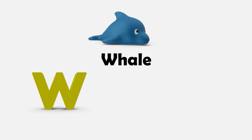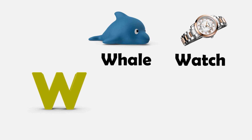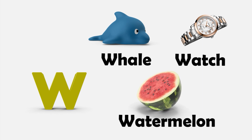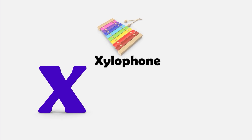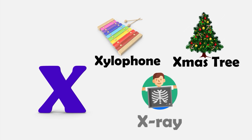W — W is for Whale. W is for Watch. And W is for Watermelon. X — X is for Xylophone. X is for Christmas Tree. And X is for X-Ray.